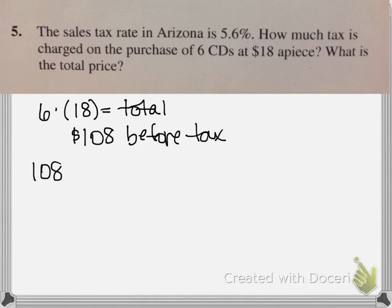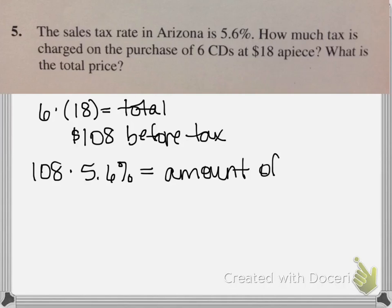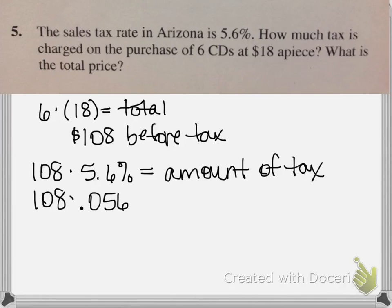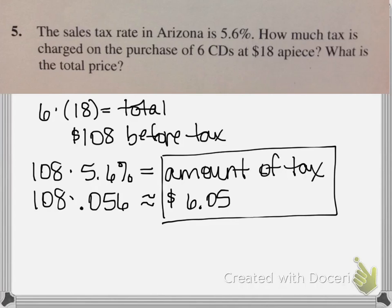Now I take $108 and find 5.6% of that. Converting to a decimal, 5.6% becomes 0.056. So $108 times 0.056 gives me $6.05, rounding to the nearest cent. This is the amount of tax — not how much we're paying total. That answers the first part of the question: how much tax is charged.